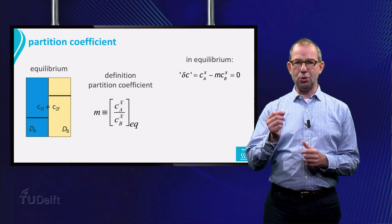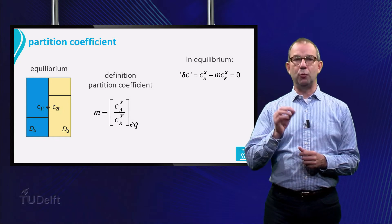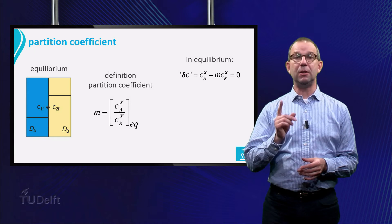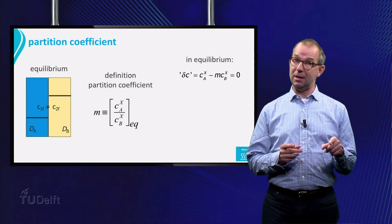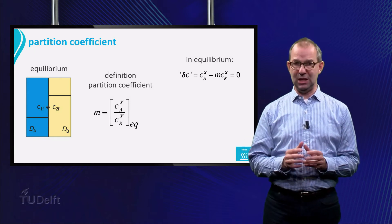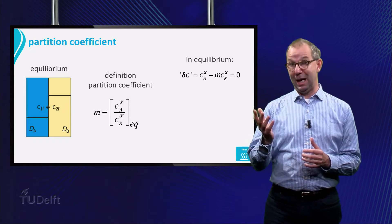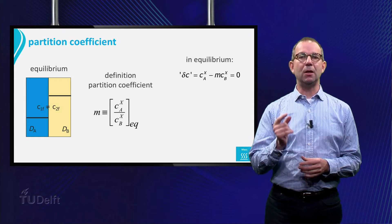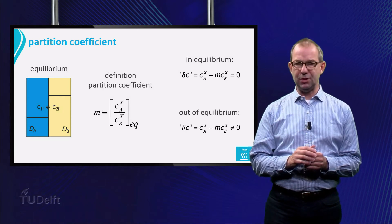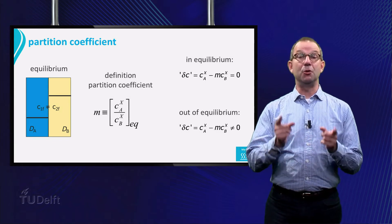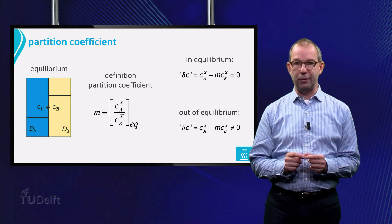We can write this also differently and redefine our driving force for mass transfer. In equilibrium, C in A minus M times C in B will be zero. As that is exactly what the M definition states. Out of equilibrium this difference must thus be non-zero, and this is our new definition of the driving force.